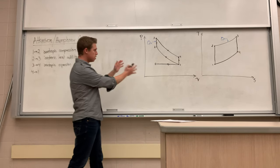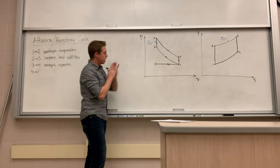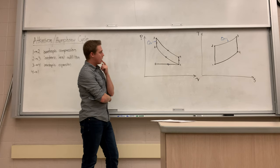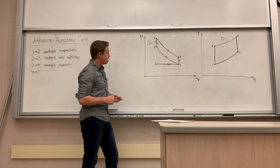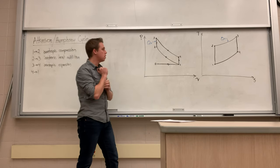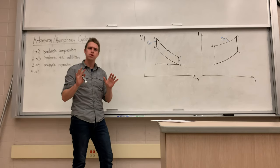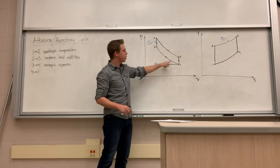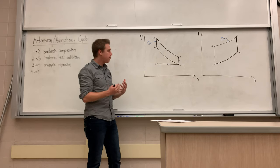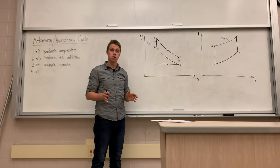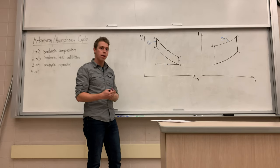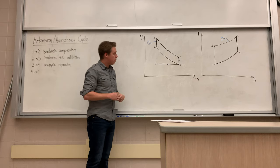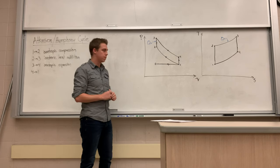Atkinson was looking at the cycle that Otto had come up with and said, how can I change this to make it more efficient, perhaps at the loss of a little bit of work? He wasn't afraid to lose work. The net work is the area enclosed on the diagram, so making the area smaller loses a little work, but Atkinson was willing to do that in order to gain efficiency — and here's how.